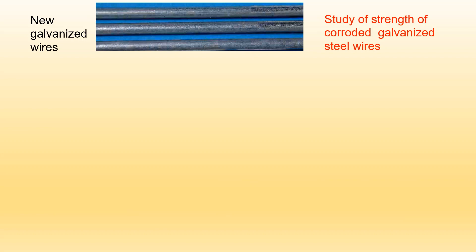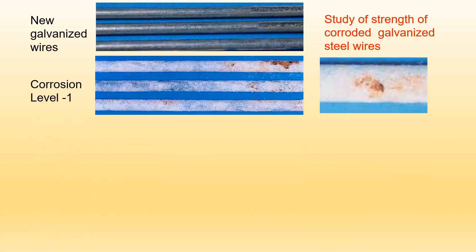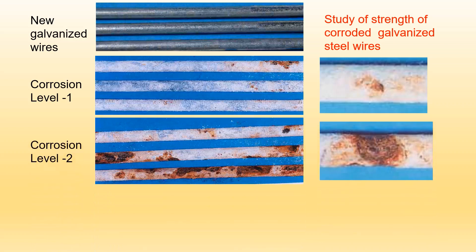I have studied cable corrosion for more than 30 years. I'll show you one of my studies of galvanized steel wires. This is a new and healthy wire. We made corroded wires at three levels. This is corrosion level 1 — the wire is covered with white zinc corrosion.